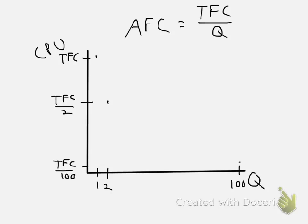As output keeps expanding, total fixed cost remains the same while quantity gets bigger and bigger. Average fixed cost will eventually get close to 0, but it won't be 0. The curve looks something like this — average fixed cost is always downward sloping when quantity increases.